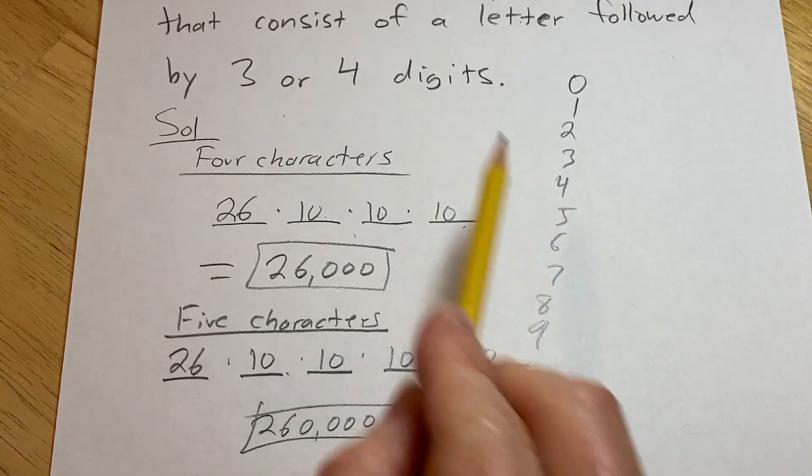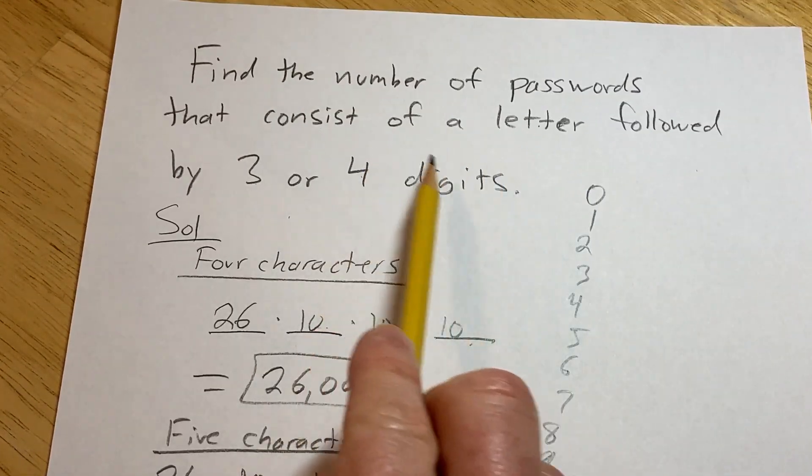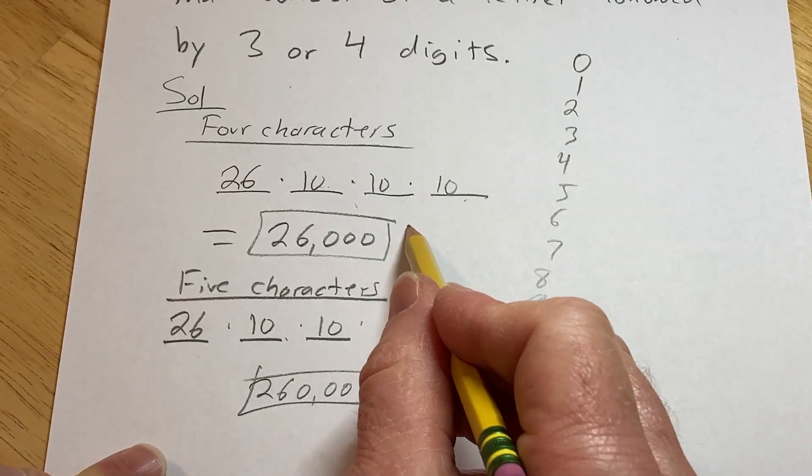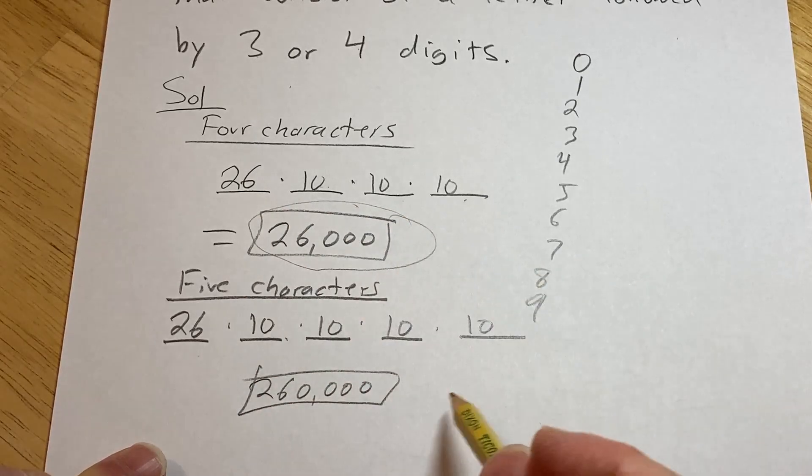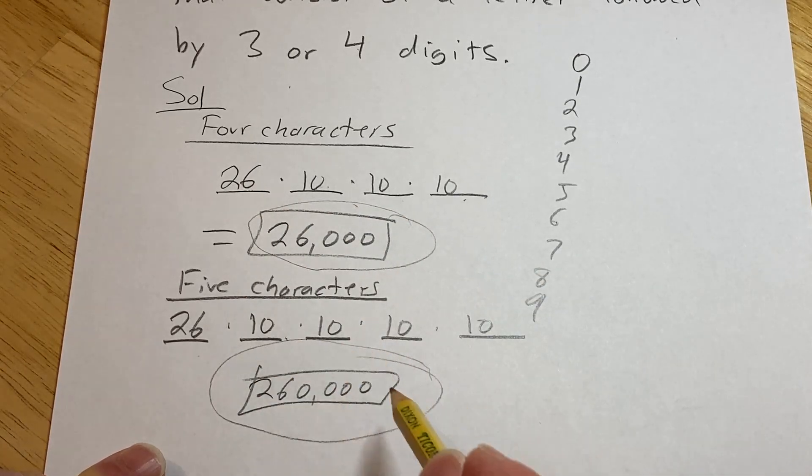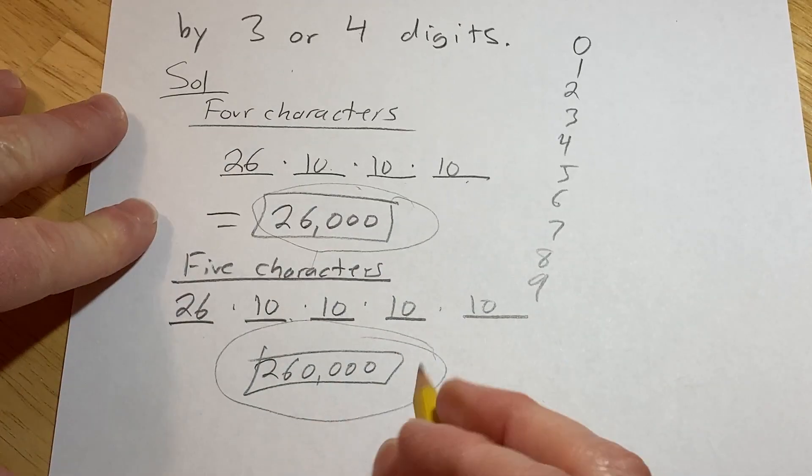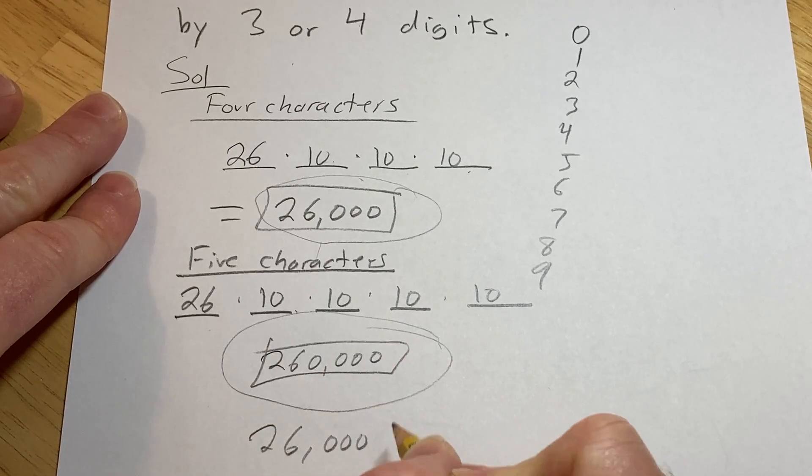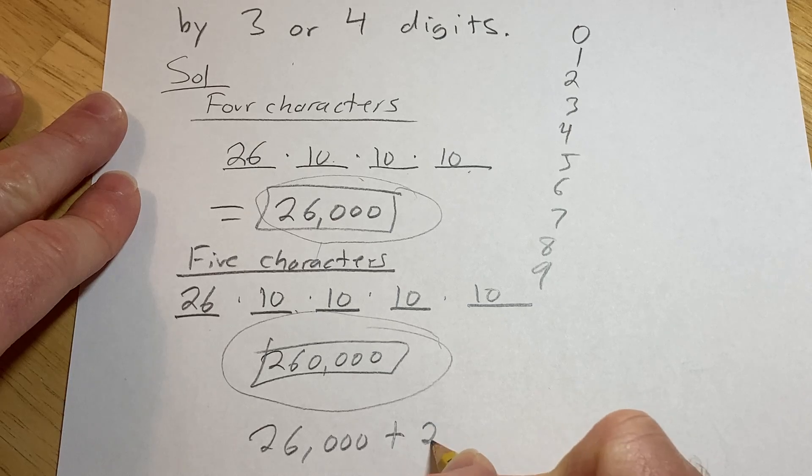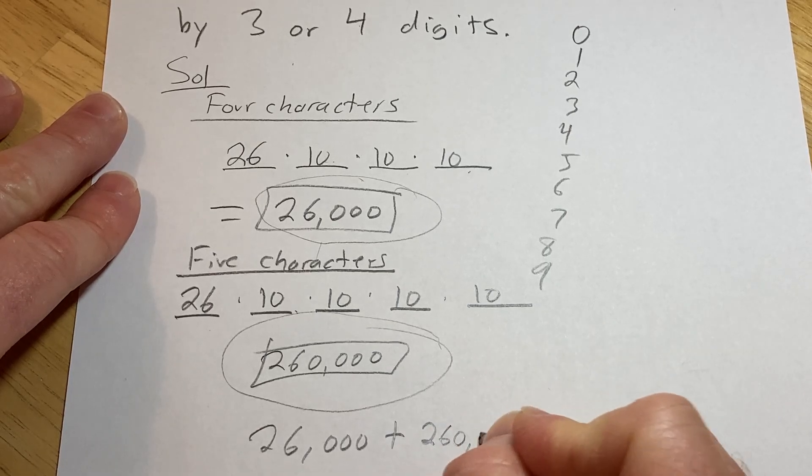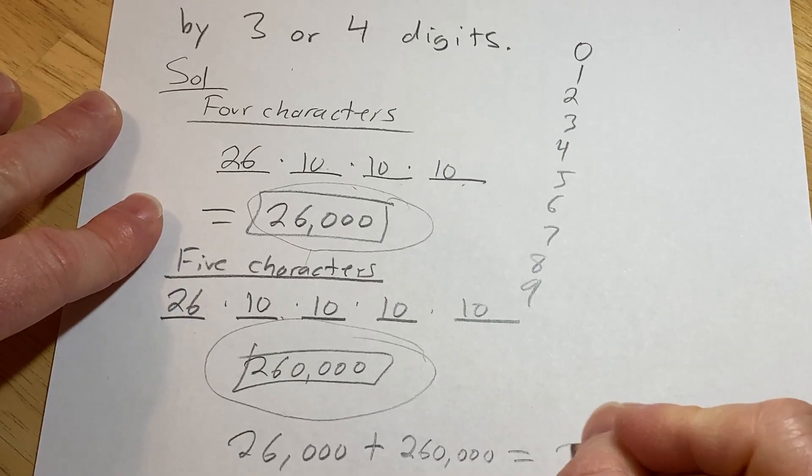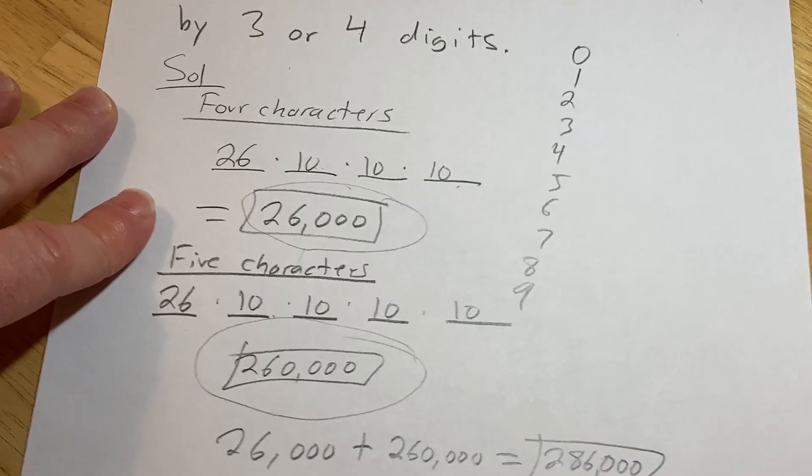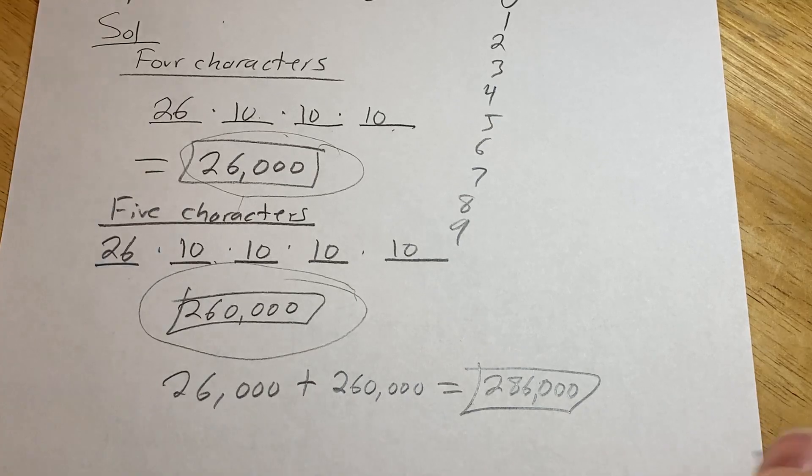So now we can answer the question, which is find the number of passwords that consist of a letter followed by three or four digits. So it's going to be all of the four character passwords plus all of the five character passwords. And there's no overlap, so we can just add up the numbers. So that would be 26,000 plus 260,000, which equals 286,000 possible passwords. That is a lot of passwords.